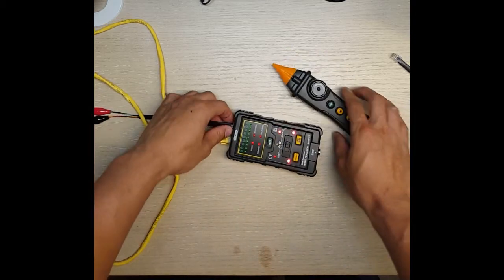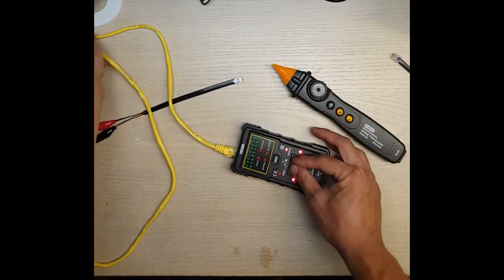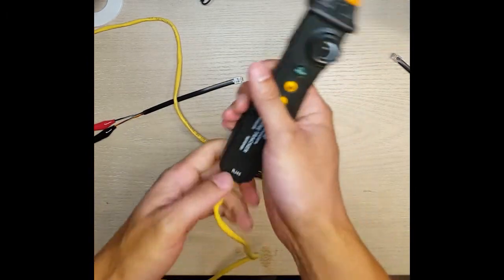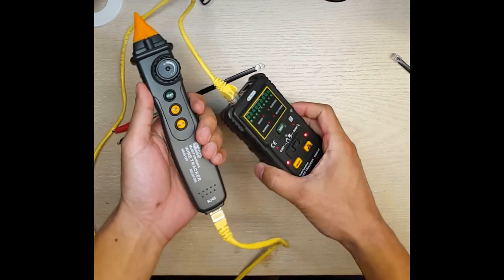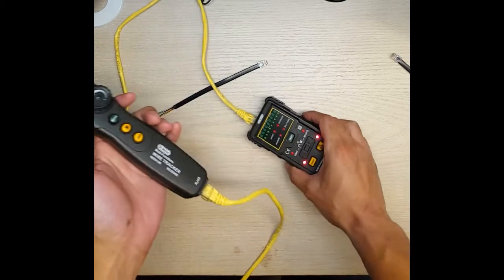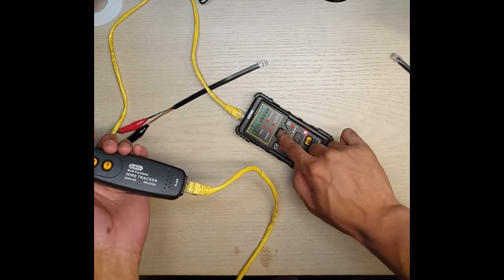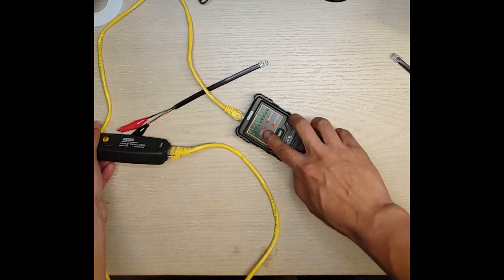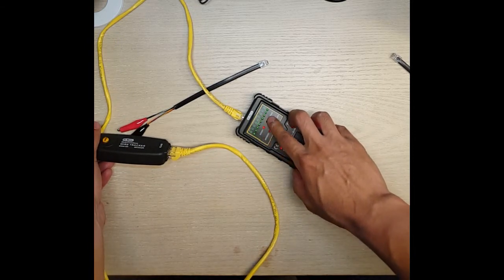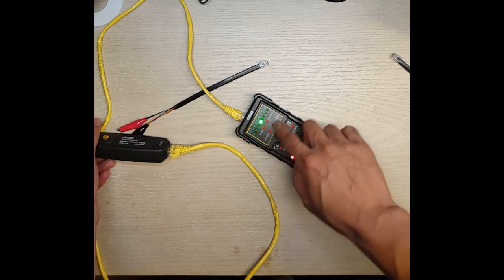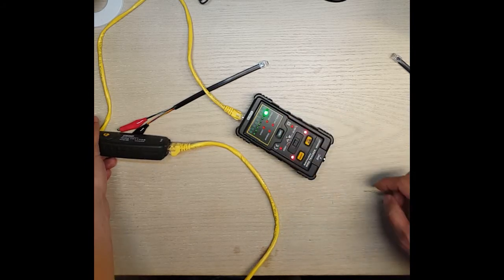Also, you can check to make sure the wiring is correct by connecting this transmitter to the scanner and then pressing the test button. It will light up through all the lights of the wire to make sure there's no short, no missed wire, reverse, or split pair.